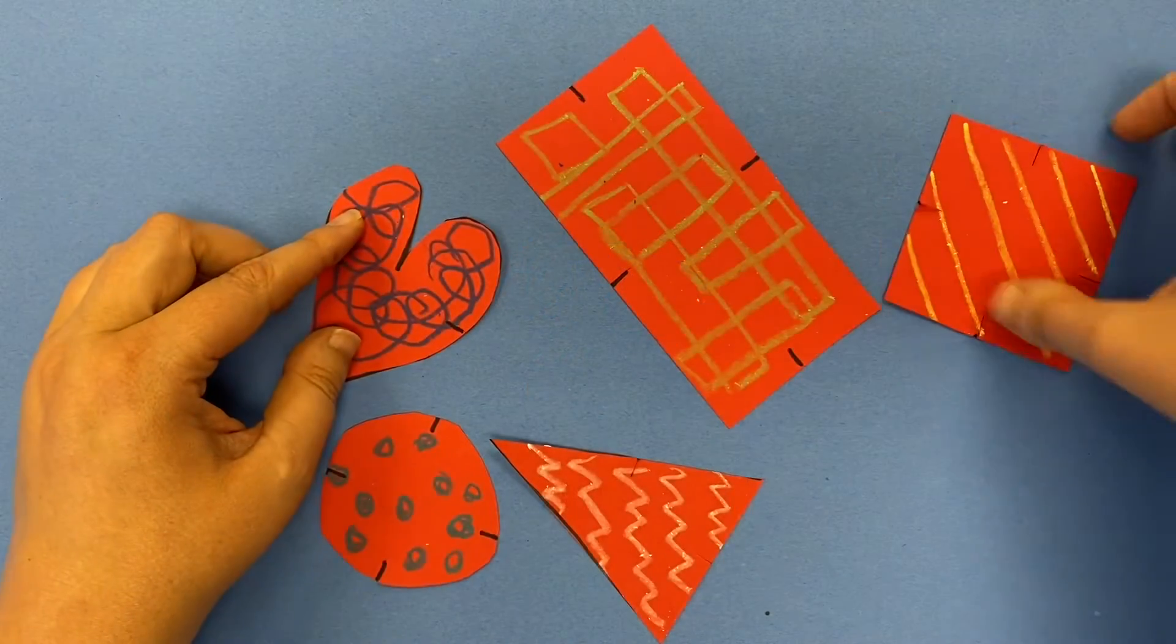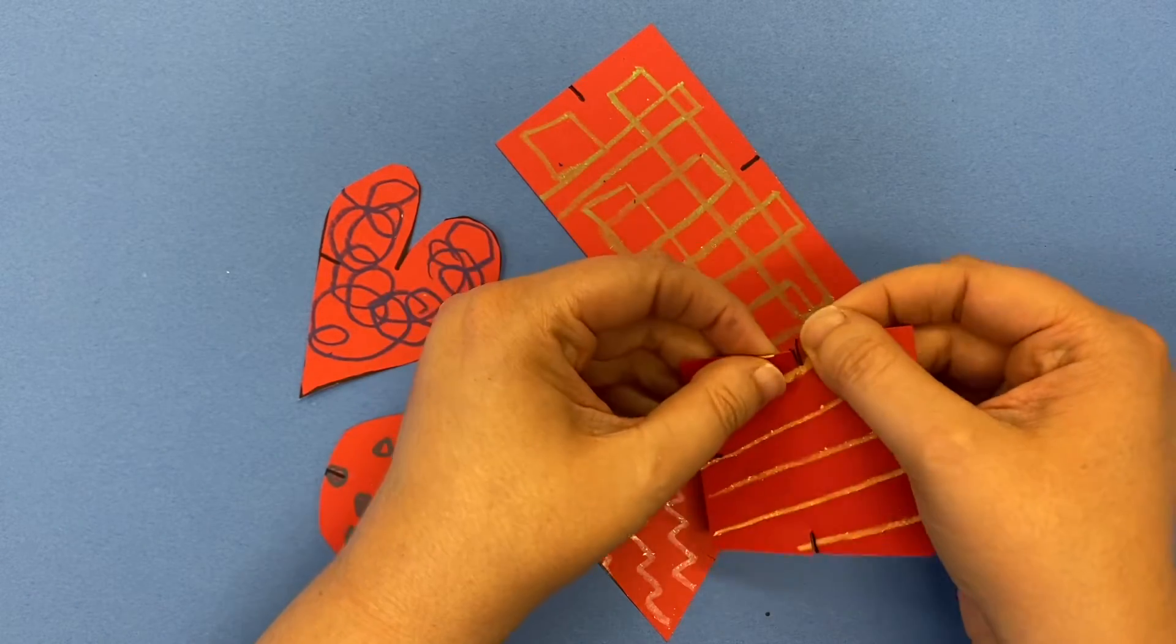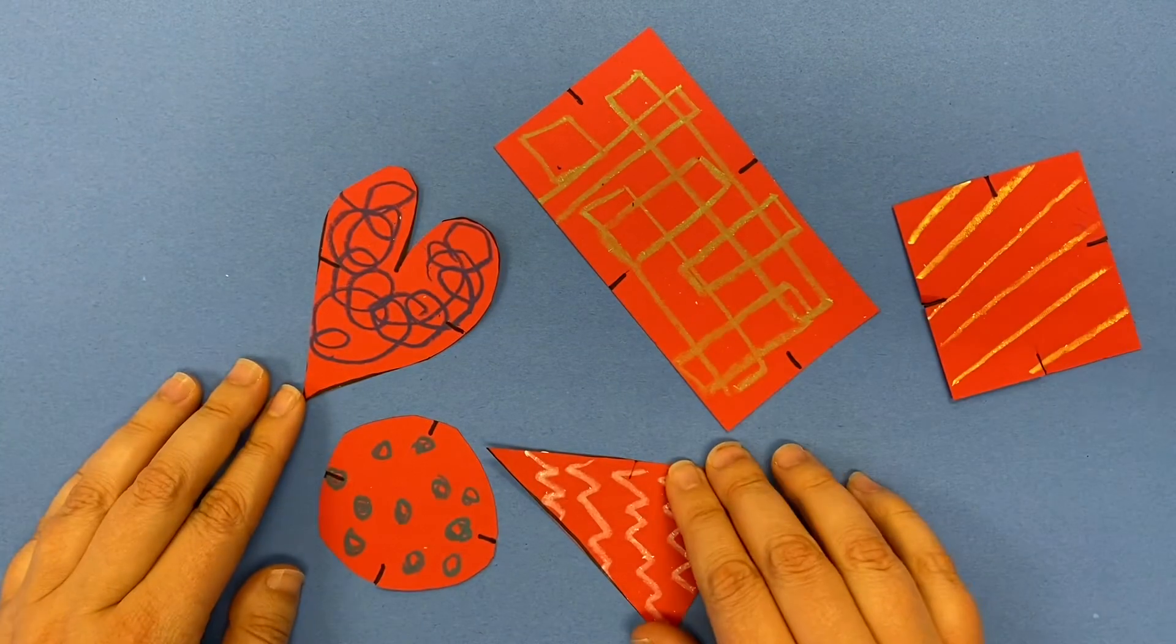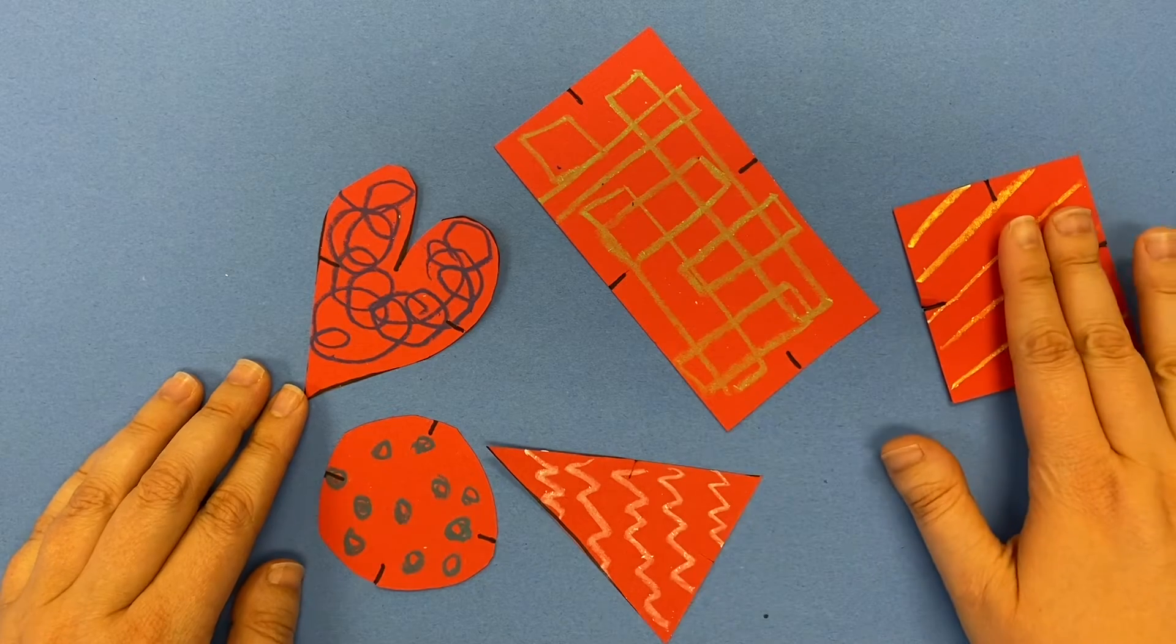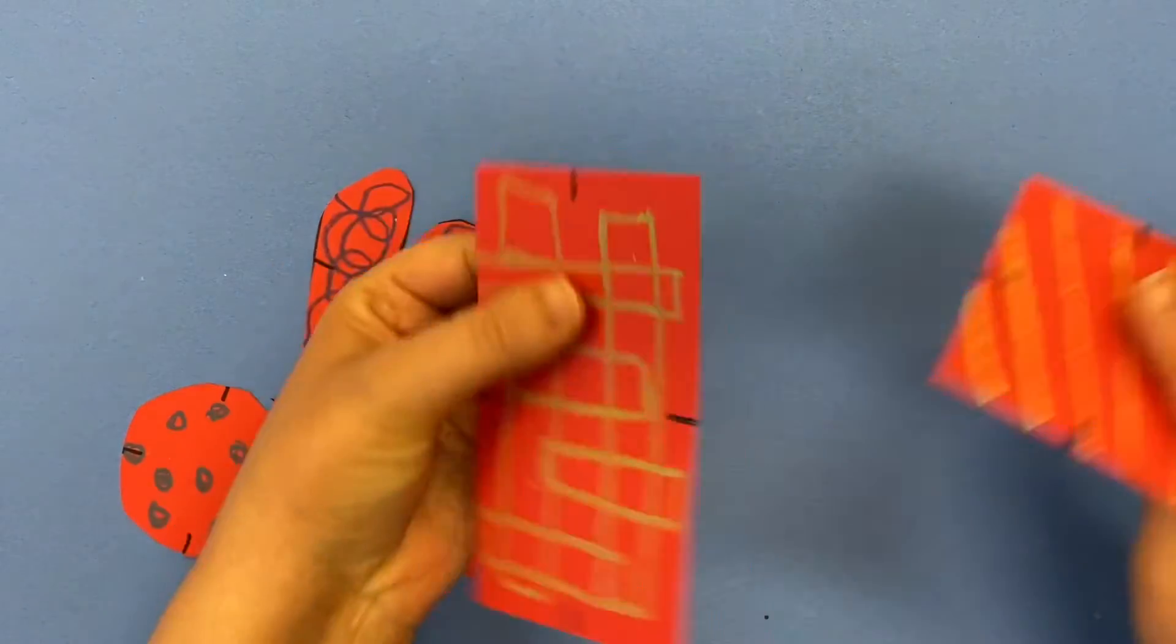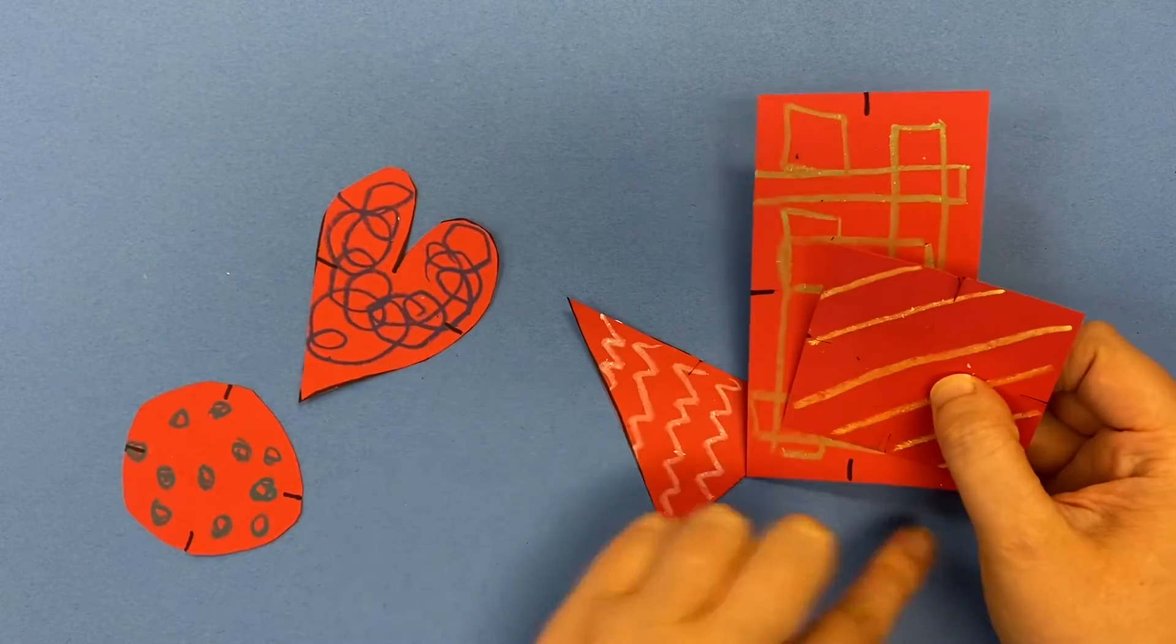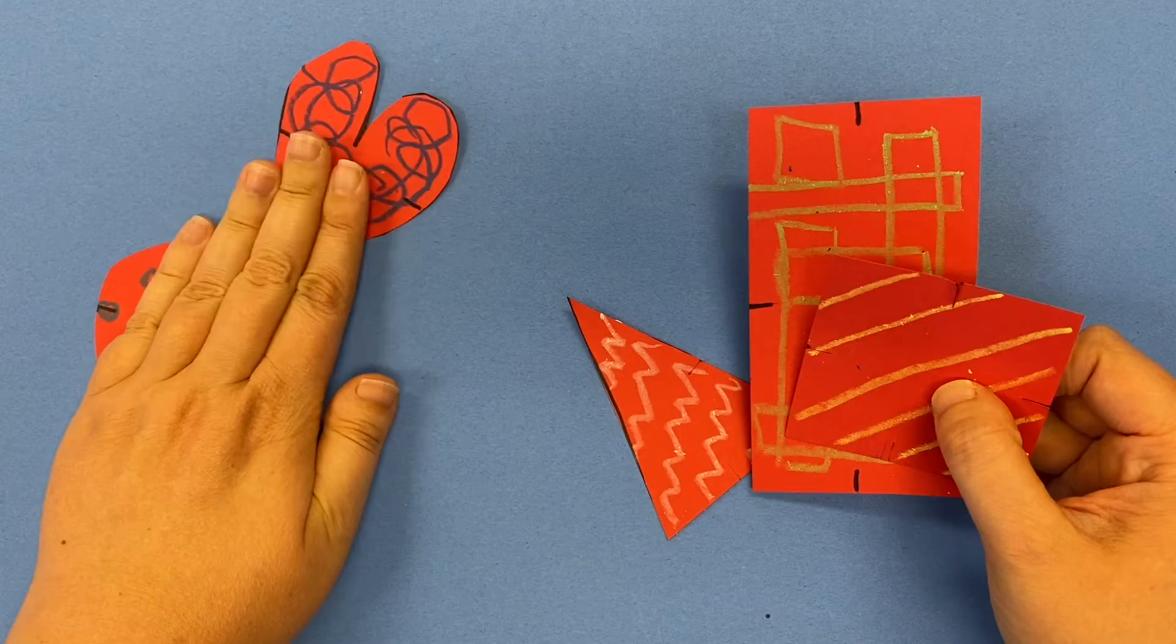So I have all of those little lines cut on each side of my shapes. And now I'm ready to start putting them together. And what you want to do is just pick any two shapes. I would start with ones that just have straight edges. I would save the ones with curvy edges for the end.